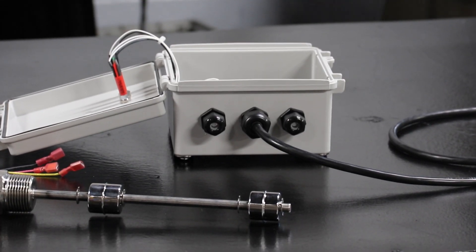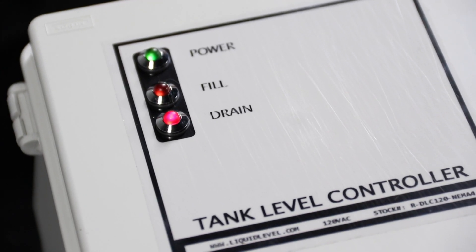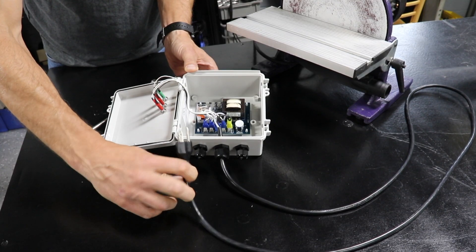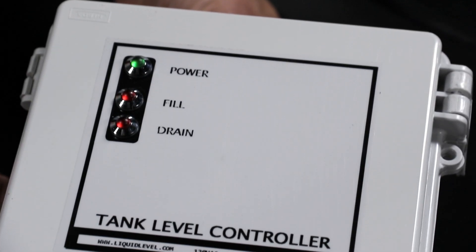This convenient level control relay box is all you need to maintain or control the liquid level for your application. Inside the box there's a level control relay that's connected to a power cord. These LED lights indicate power, fill mode, and drain mode.